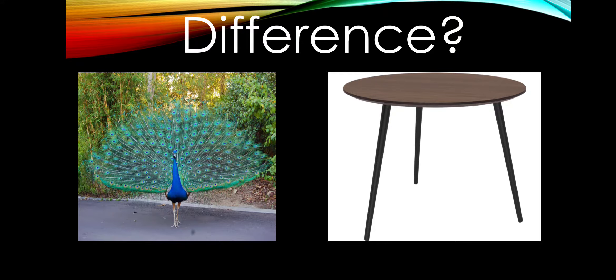For example, if I give you two options like peacock and table, are both of these similar or is there any difference between these? Yes, there are definitely many differences among these. For example, while peacock can breathe, table cannot breathe. While peacock can move, table cannot move without any external force, right?